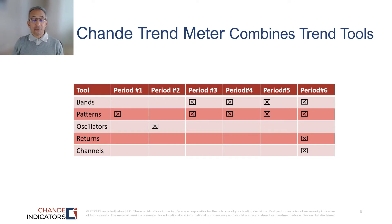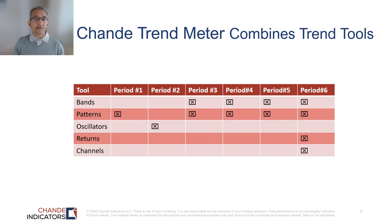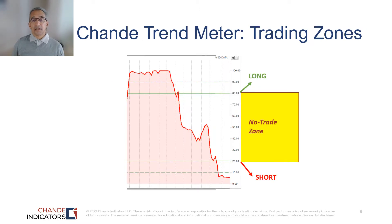Here's a design overview of the Chandé Trend Meter. I've used five different classes of trend indicators: bands, patterns, oscillators, returns, and channels, across six different time intervals ranging from two days out to 100 days. The big challenge was which indicators to combine and how to combine them — but I've done all the homework, and all you have to do is use it.